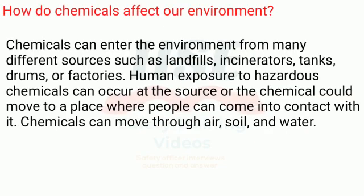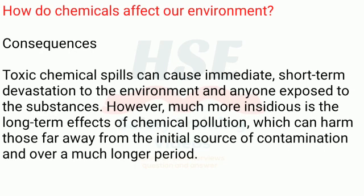How do chemicals affect our environment? Chemicals can enter the environment from many different sources, such as landfills, incinerators, tanks, drums, or factories. Human exposure to hazardous chemicals can occur at the source, or the chemical could move to a place where people come into contact with it. Chemicals can move through air, soil, and water. Toxic chemical spills can cause immediate short-term devastation to the environment and anyone exposed.